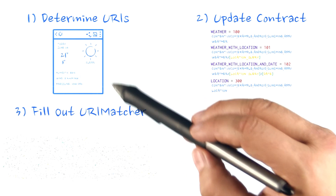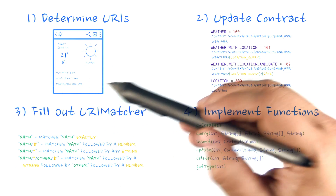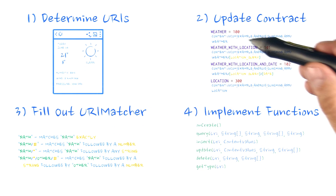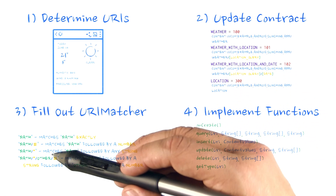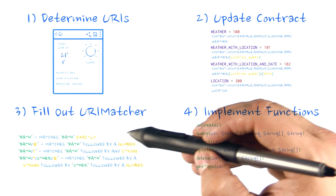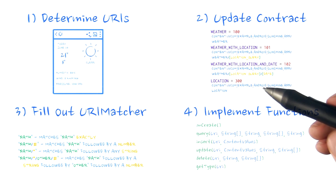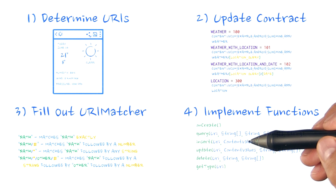Building a content provider involves several steps: determining the URIs your application will need to support, updating the contract to include these URIs, filling out a URI matcher that supports each of these URIs, and implementing the six required content provider functions.